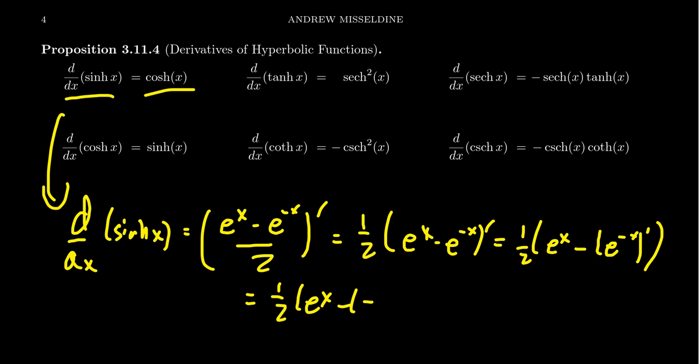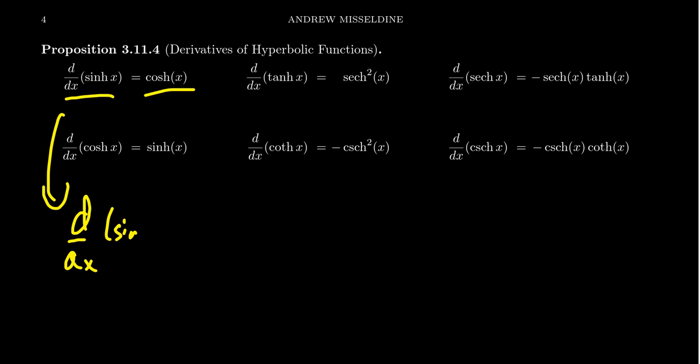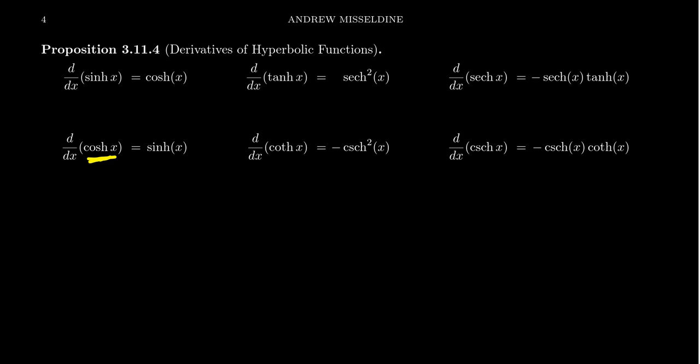A similar statement is also going to be true for cosh. We can prove by the same argument that the derivative of cosh is equal to sinh. You'll notice that the negative sign is missing. This is something we saw earlier with hyperbolic functions — it's basically the same as trigonometric functions, but sometimes the negatives become positive and positives become negative. So the derivative of sinh is positive cosh and the derivative of cosh is positive sinh.